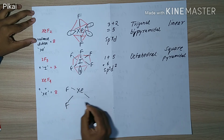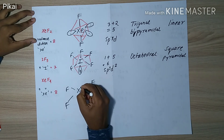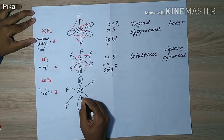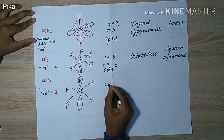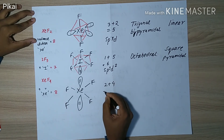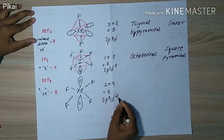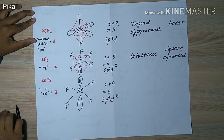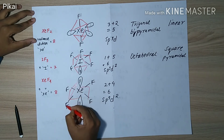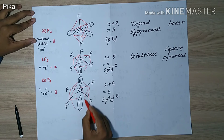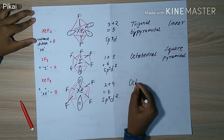For XeF₄, xenon is the central atom with eight valence electrons. It forms bonds with four fluorine atoms, and we are still left with four electrons, forming two lone pairs. From the formula, two lone pairs plus four bond pairs gives six, denoting sp3d2 hybridization.